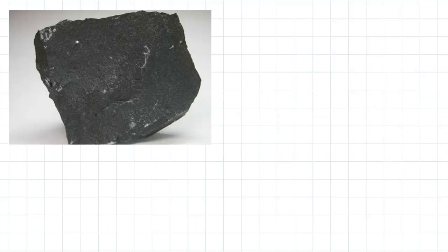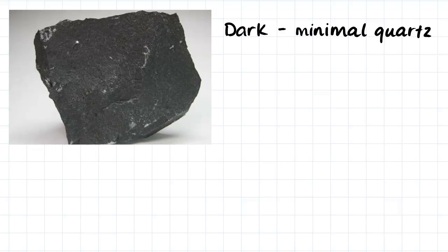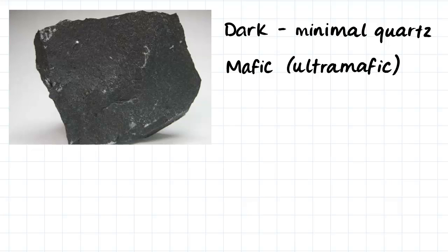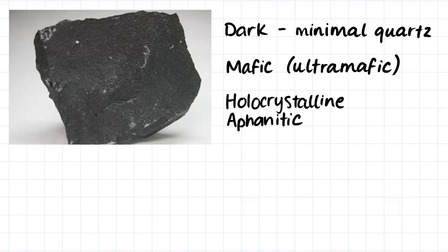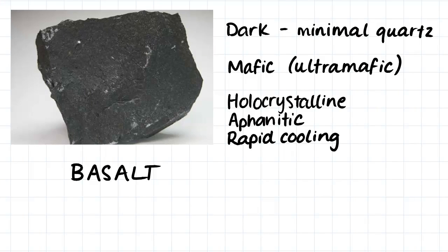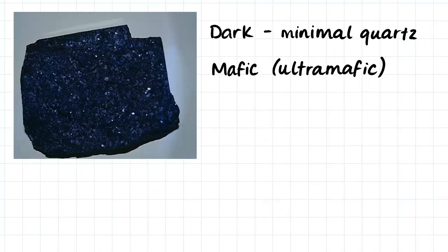Here's our first igneous rock sample. Firstly, I would say that it is rather dark in color and therefore contains minimal quartz within it. Because quartz is silica, I would say that the rock is a mafic rock, possibly even ultra-mafic. I would then say that the rock is holocrystalline, however the crystals are very small and therefore cannot really be seen with the naked eye. Therefore I would probably say that it's an aphanitic rock because the crystals are so small — we can assume that the molten rock cooled very quickly. Finally, a rock which fits all of these descriptors is usually called basalt.